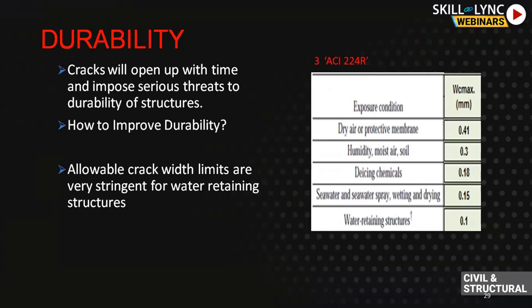This is ACI 224R — Control of Cracking in Concrete Structures. If you look at the bottom row, this is only 0.1 mm allowable crack width. For dry air you have crack width 0.41; for seawater in your structure it's 0.15; for humid soil around your structure you can go for 0.3. But when it is a water-retaining structure, you need water tightness, durability, and tight appearance criteria so the cracks will not appear, as shown in the clarifier example. So we will go with 0.1 mm — this is very stringent criteria.